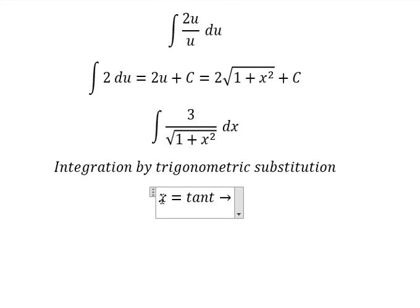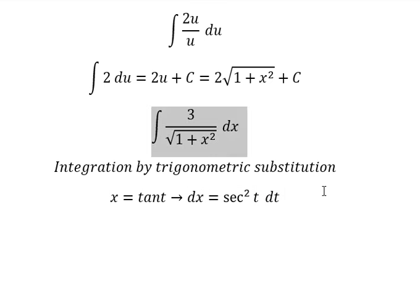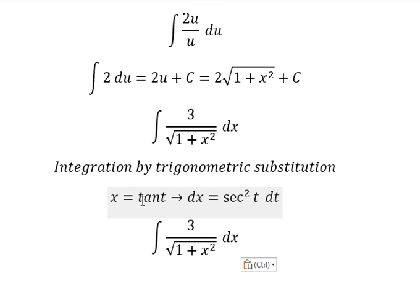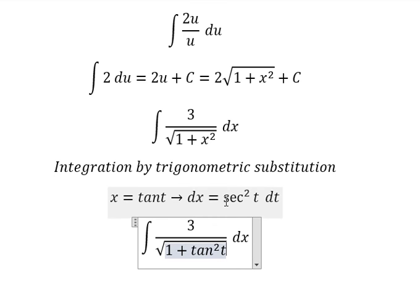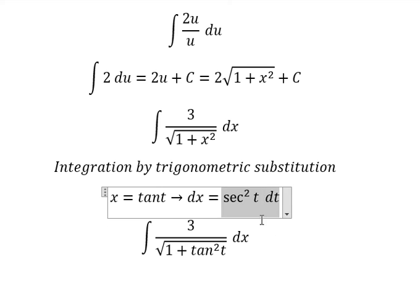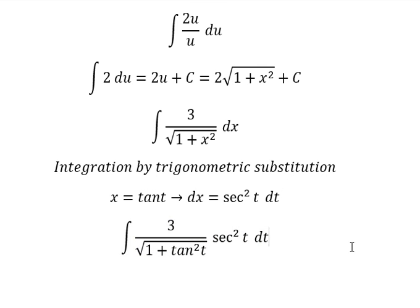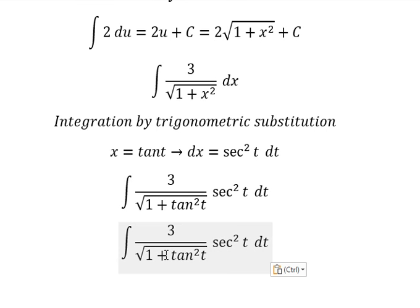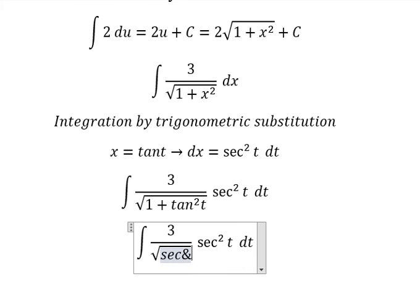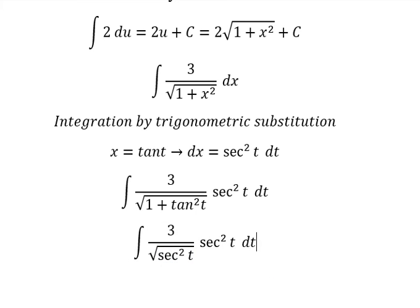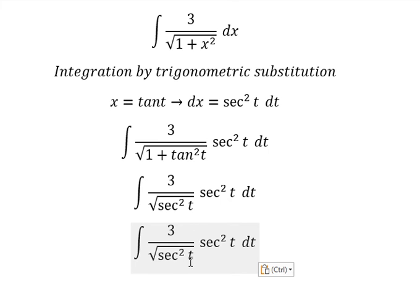Next, we need to do the first derivative for both sides, and we get sec(t) squared dt. I will substitute this in. So dx is replaced by sec(t) squared dt. Then one plus tan(t) squared is replaced by sec(t) squared, and the square root of sec(t) squared becomes sec(t).